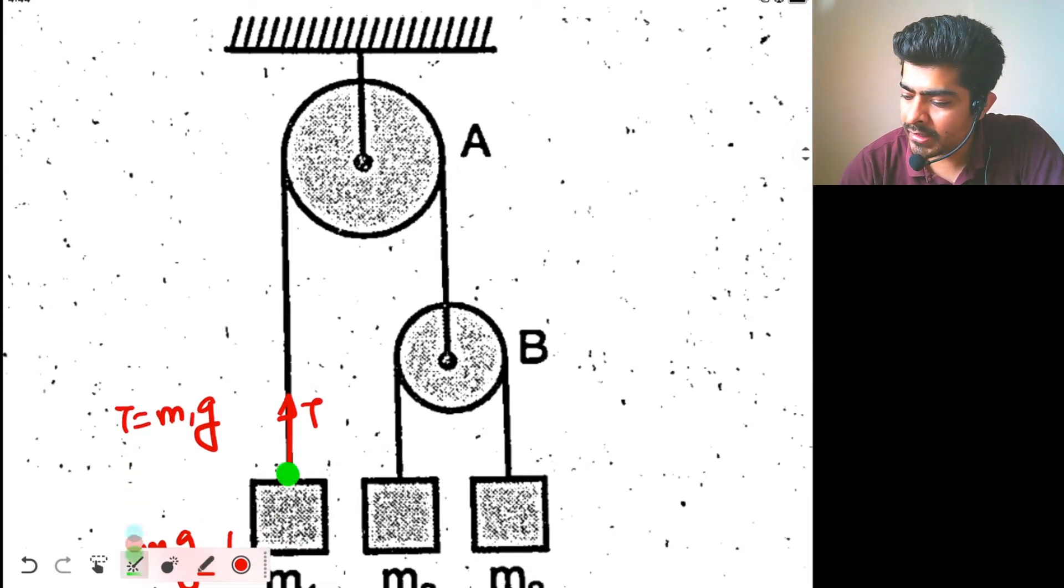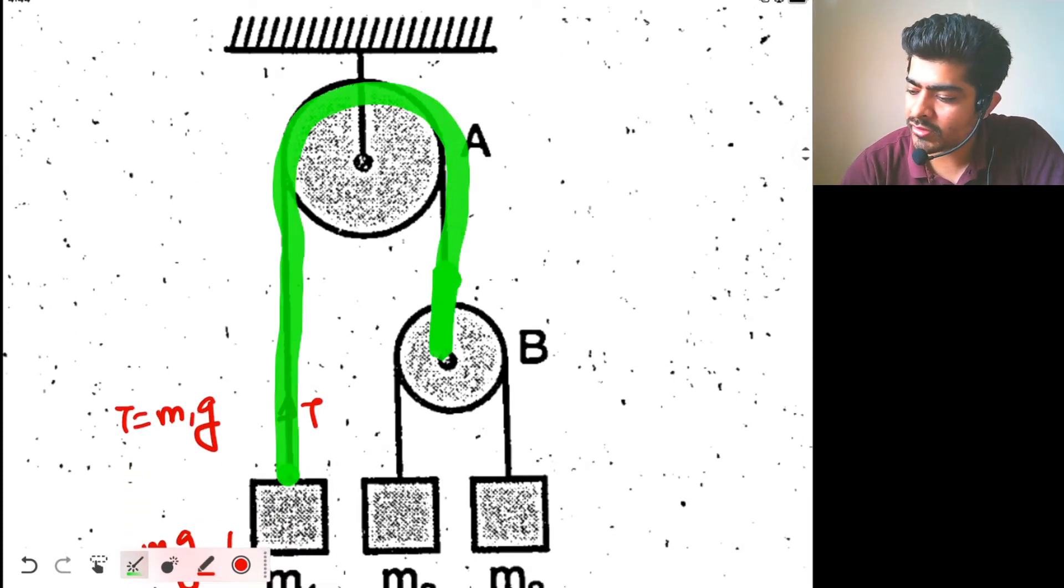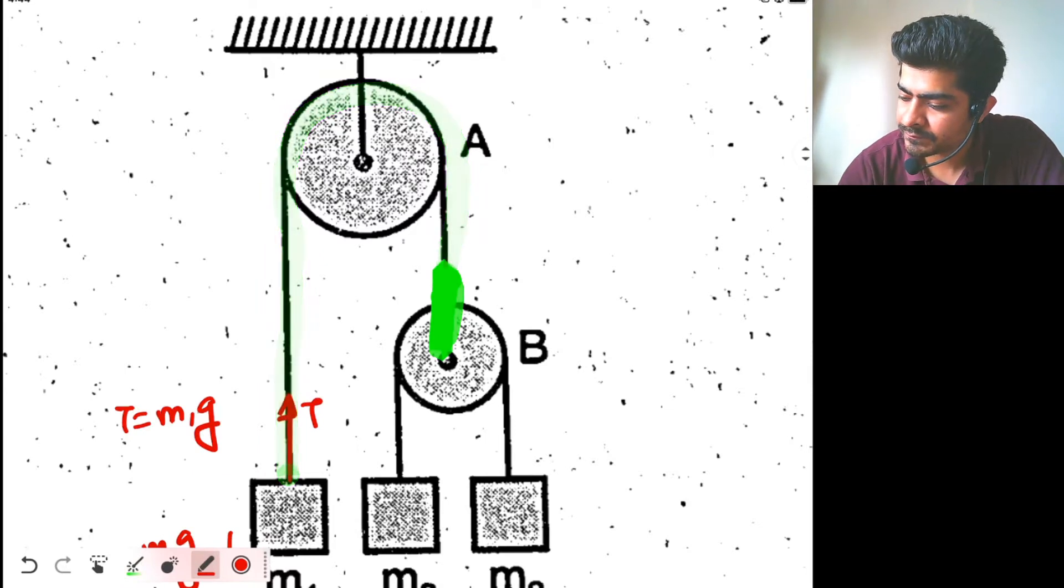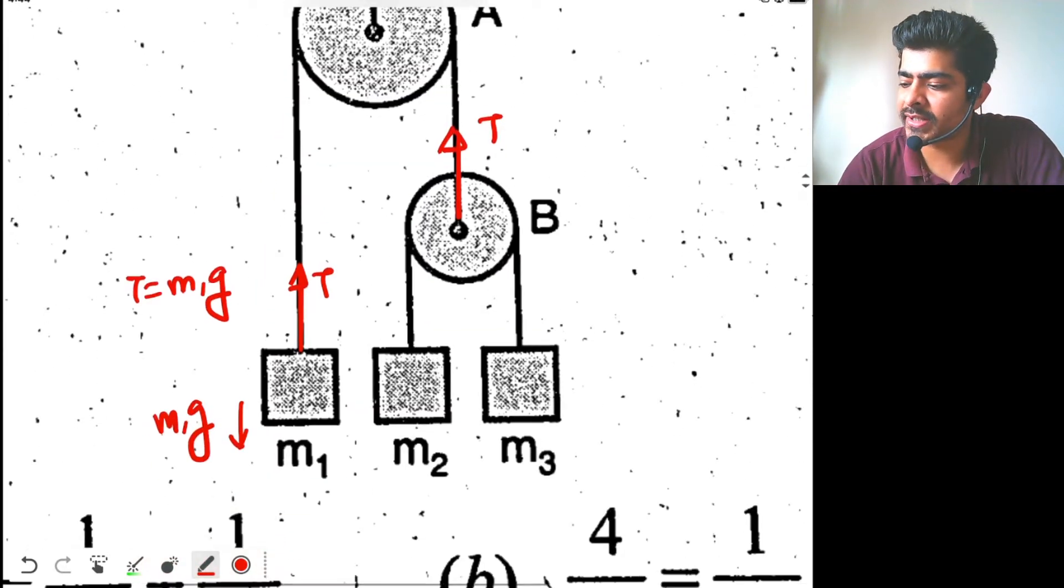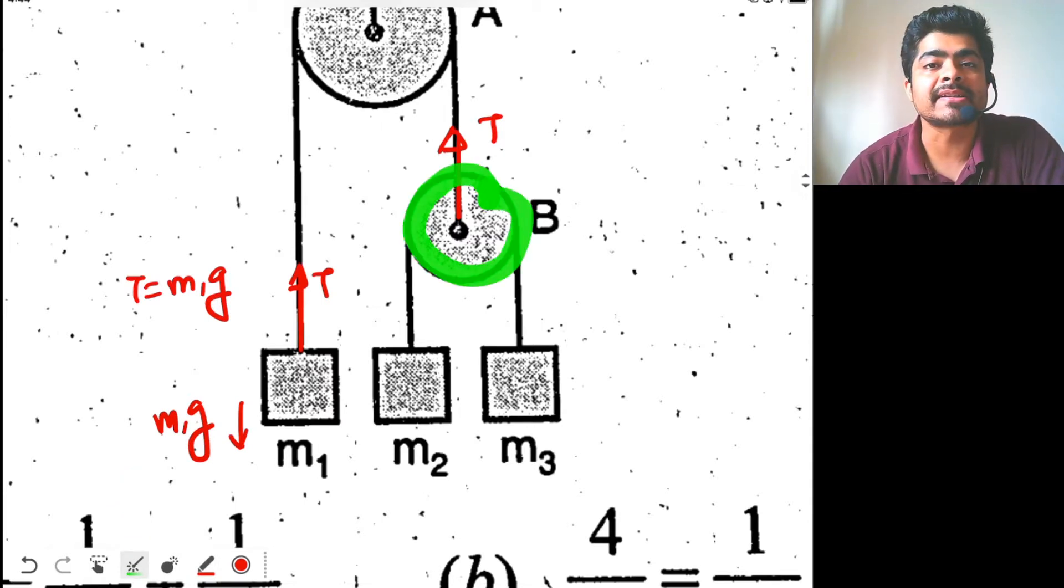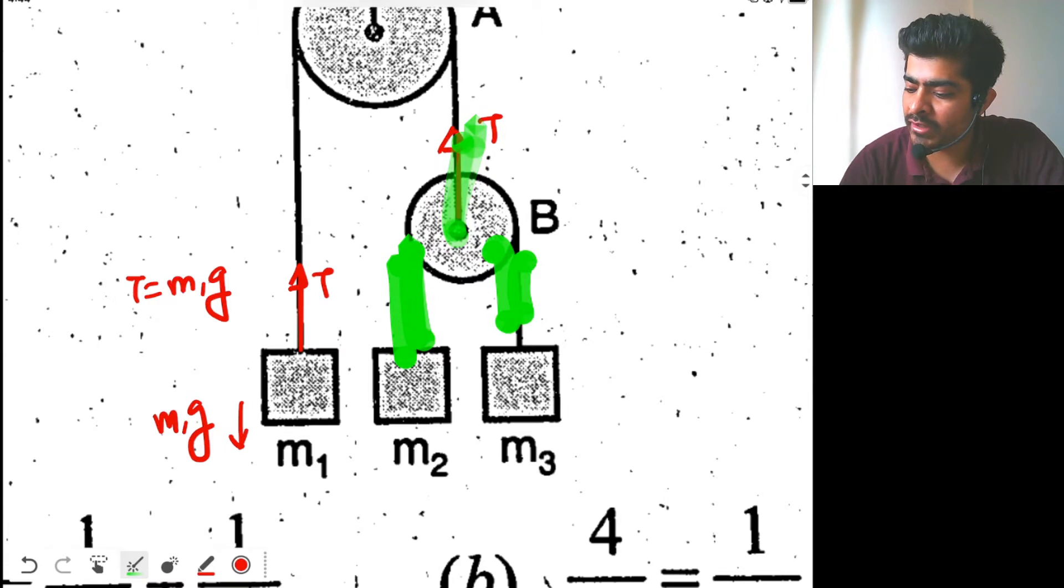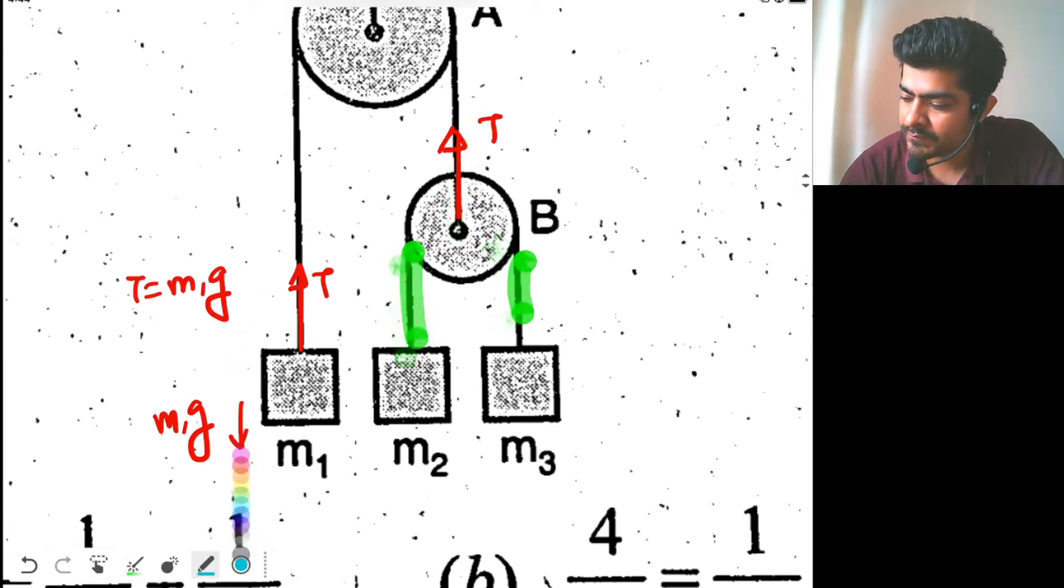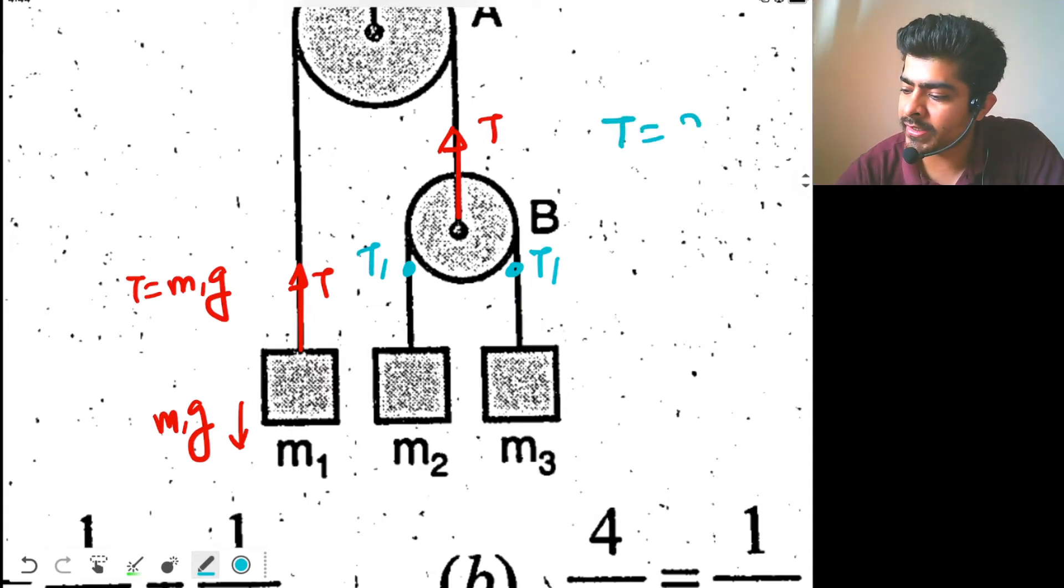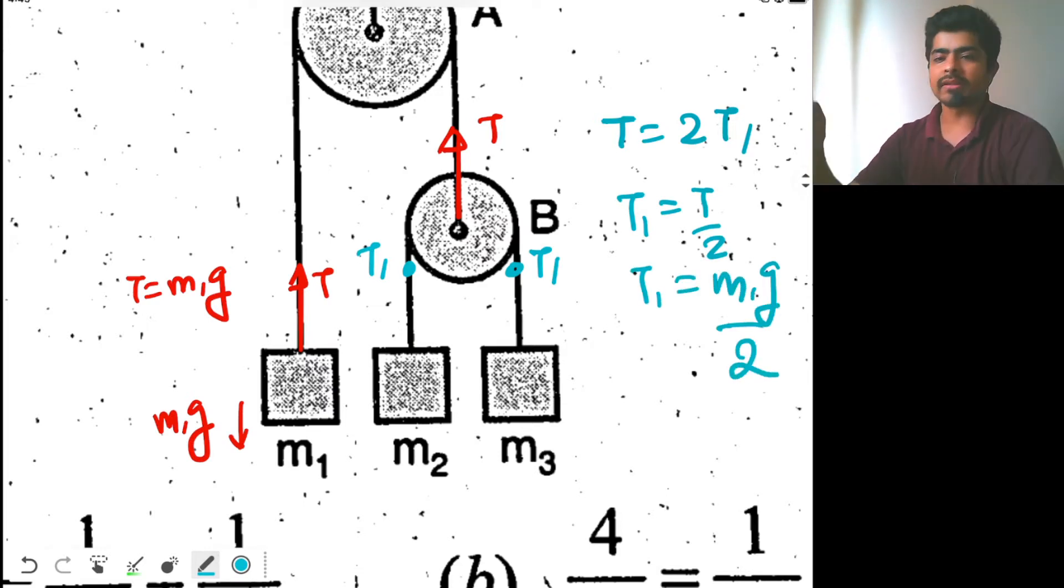Now this string is getting transferred over here, so here also we will have same tension T. And since this pulley is massless, light, and smooth, the tension over here will be sum of the tension on these two ends, and these two will have same tension T1. So this will have tension T1, this will have tension T1, and T will be equal to 2T1. So we can say that T1 will be T by 2, or T1 will be m1g by 2.